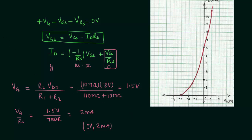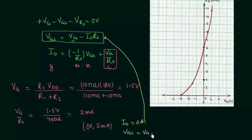For the second point on the load line, set drain current ID equal to 0A. Substituting ID = 0 into the load line equation gives VGS equal to VG. Since VG = 1.5V, the second point is (VGS = 1.5V, ID = 0A). I will locate this point at 1.5V on the VGS axis.